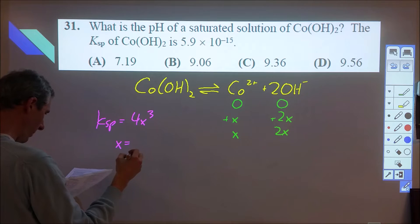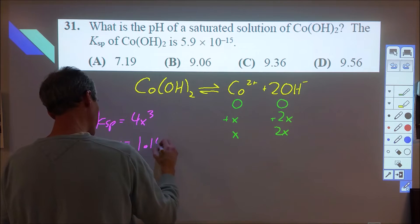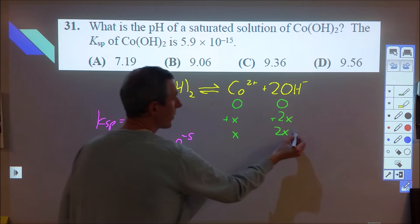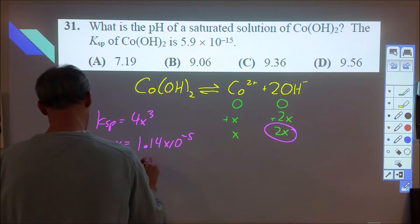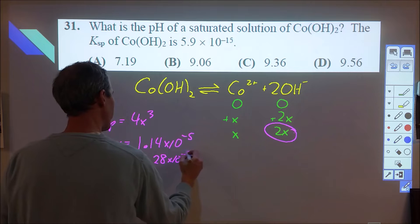And so we can solve for what x is, and x ends up coming out to be 1.14 times 10 to the negative fifth. But we want to know our hydroxide amount, and so we need to do 2x, which comes out to be 2.28 times 10 to the negative fifth.